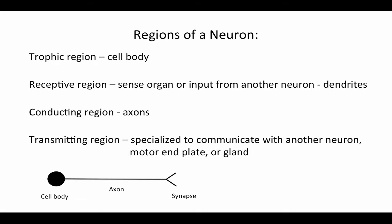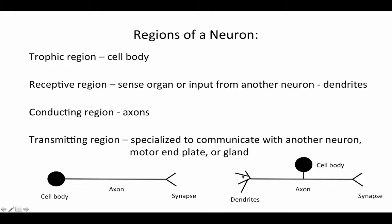When we look at neural pathways, we often diagram neurons with a dot for the cell body, a long axon, and a little V shape to indicate the synapse. For a sensory neuron, it's usually diagrammed with a small stick leading to the cell body, a branching pattern to indicate dendrites, and then the V shape at the end of the axon terminal.